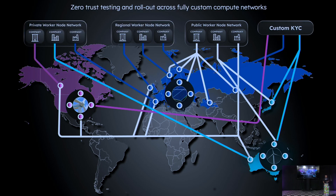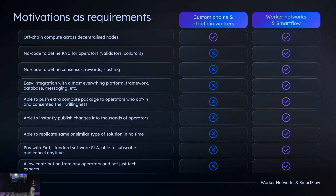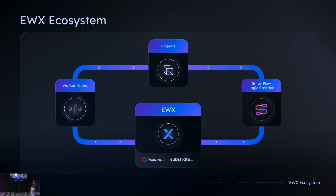We also encountered various governance requirements from these enterprises, such as private, regional, custom KYC, and even public governance requirements. We need zero-trust testing and rollout across fully custom computing networks. Having these challenges as our motivation and requirements, we needed a technology that can serve as a foundation. With the versatility and robustness that Substrate offers, we decided to leverage its key advantages in building our EWX ecosystem, which can provide an environment for enterprise solutions with varying computing and governance requirements, as well as community contribution.